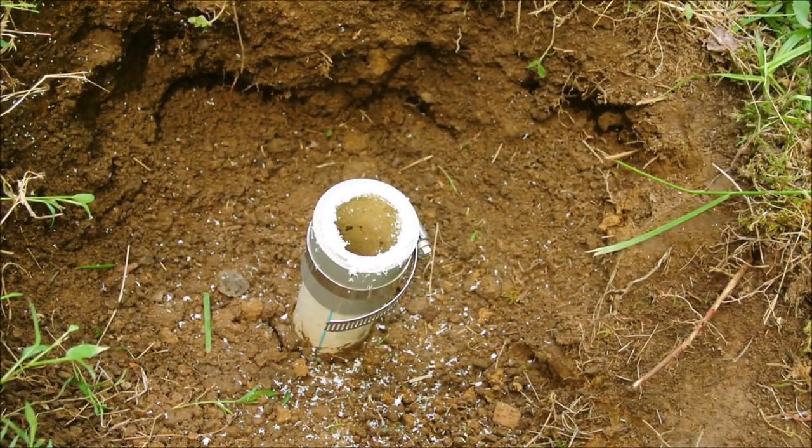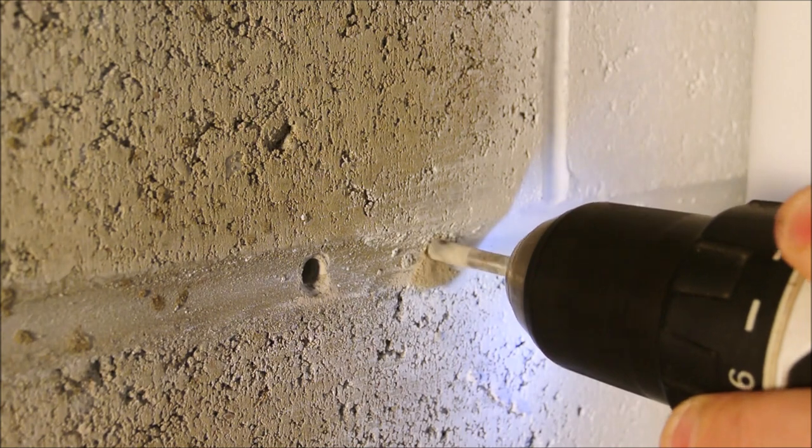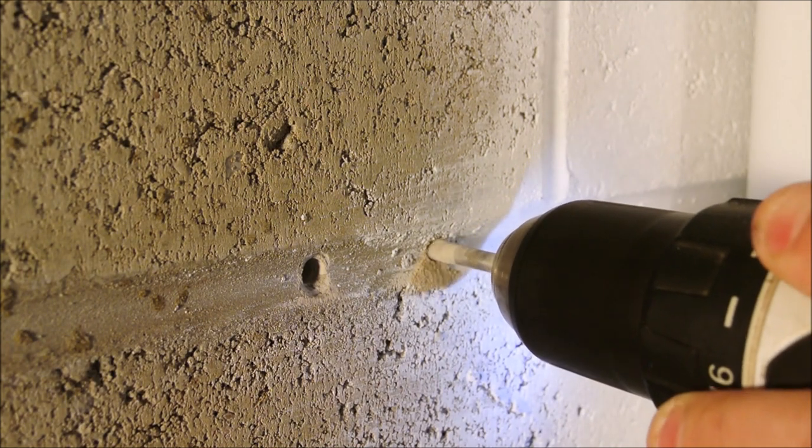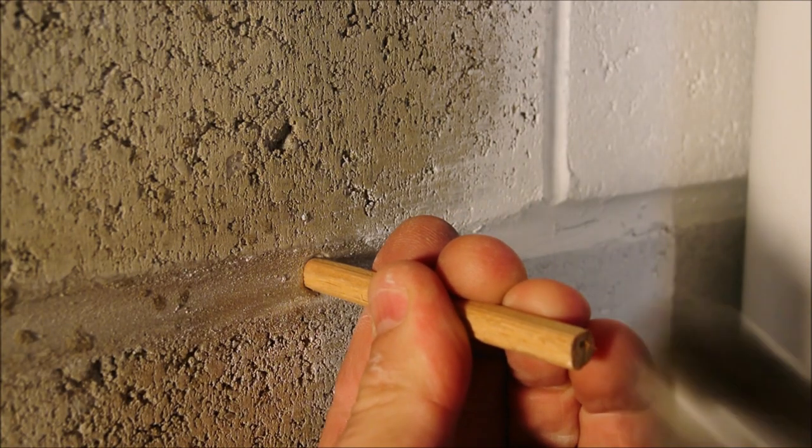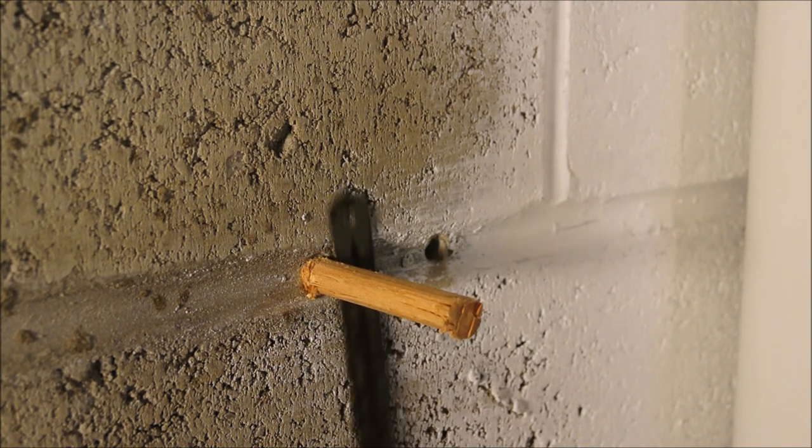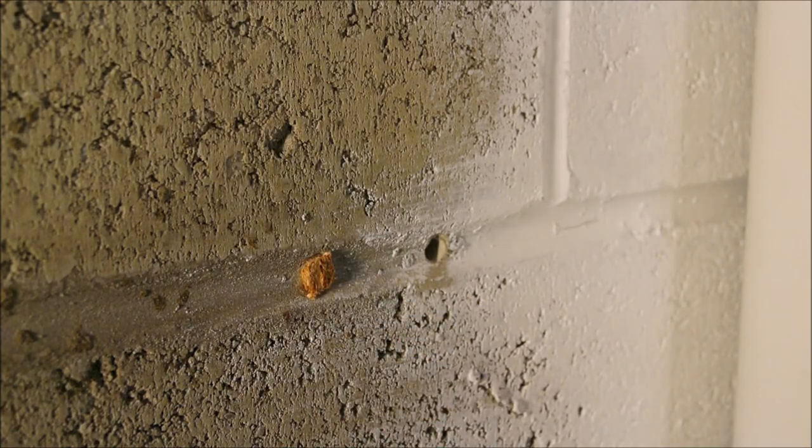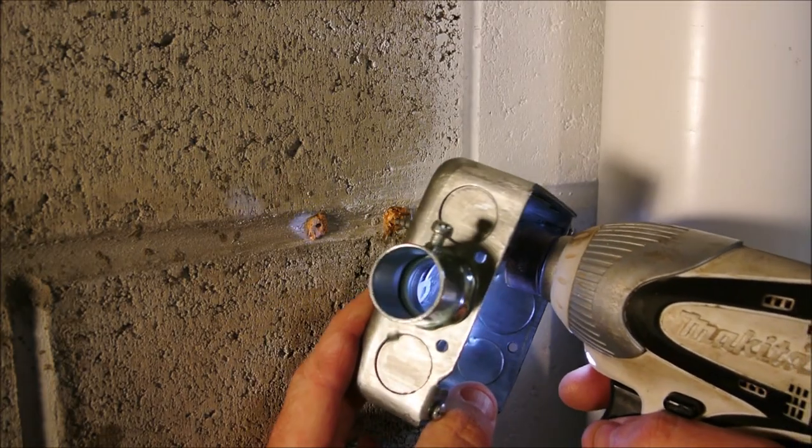The second case is whenever you want to attach something to a block wall. You can use expensive anchors, but it's easier to just screw directly into a mortar joint. Plug the hole and then screw to it. This way can also be repaired at any time in the future.